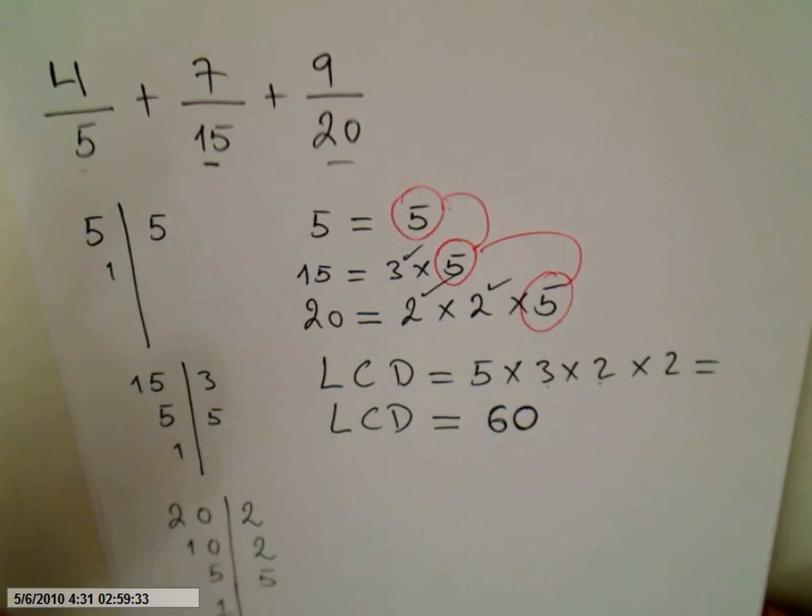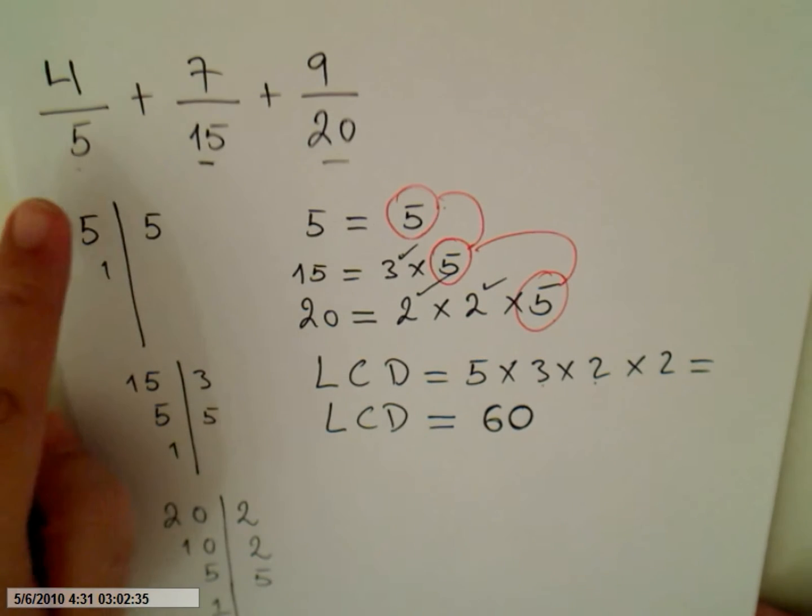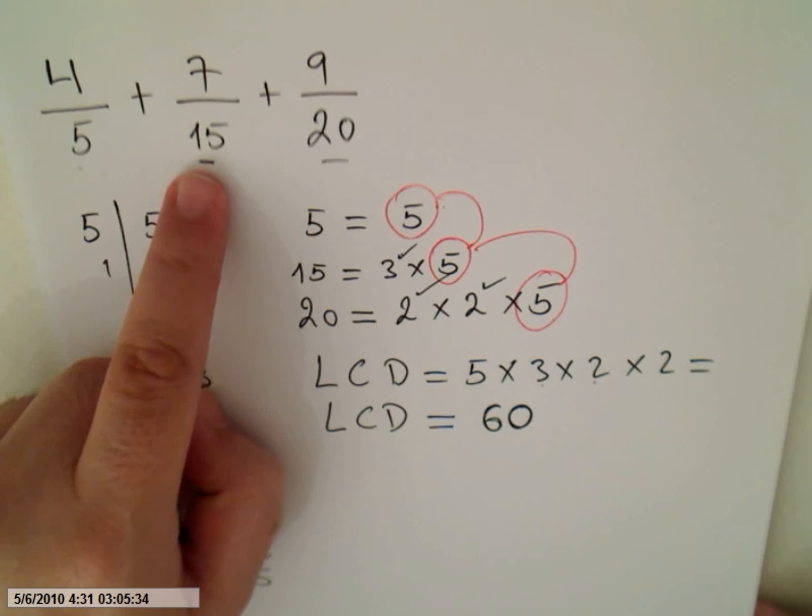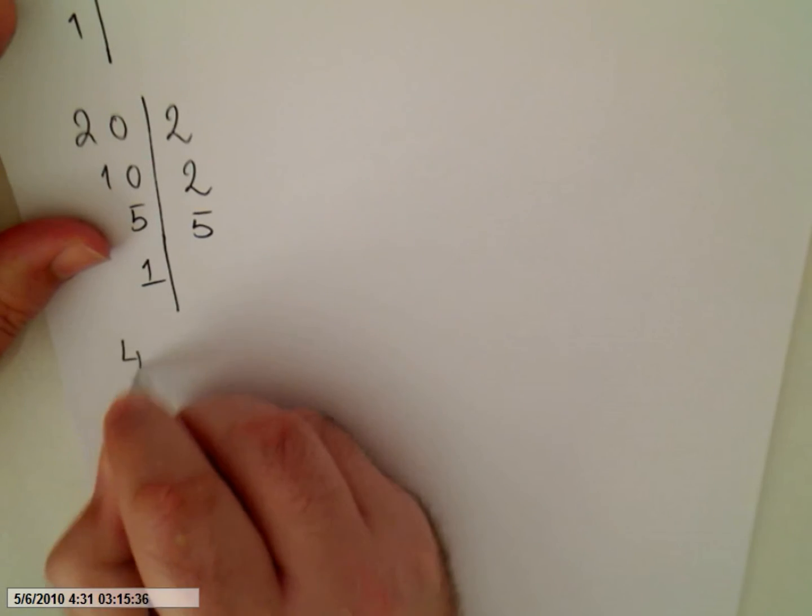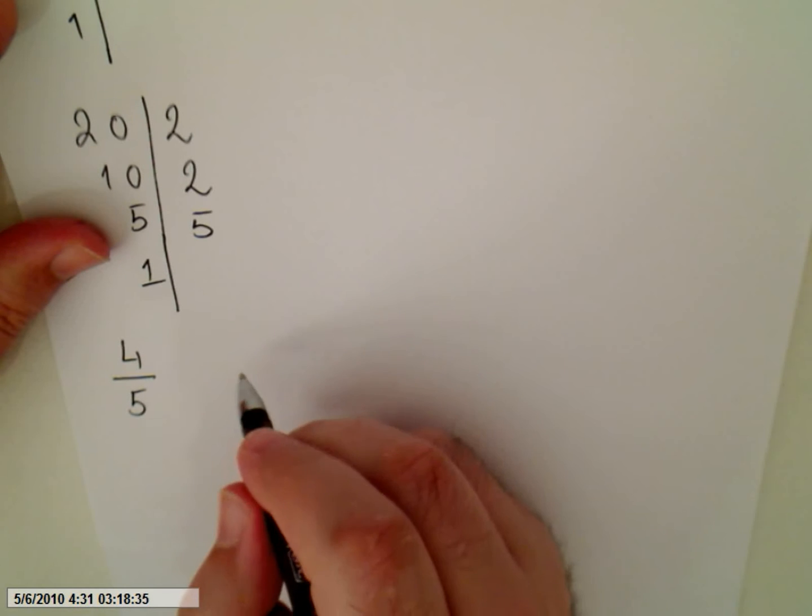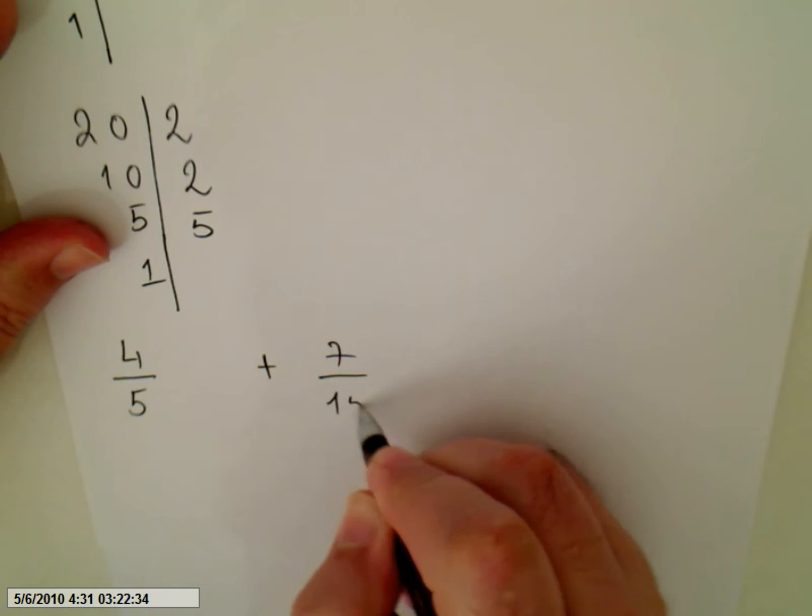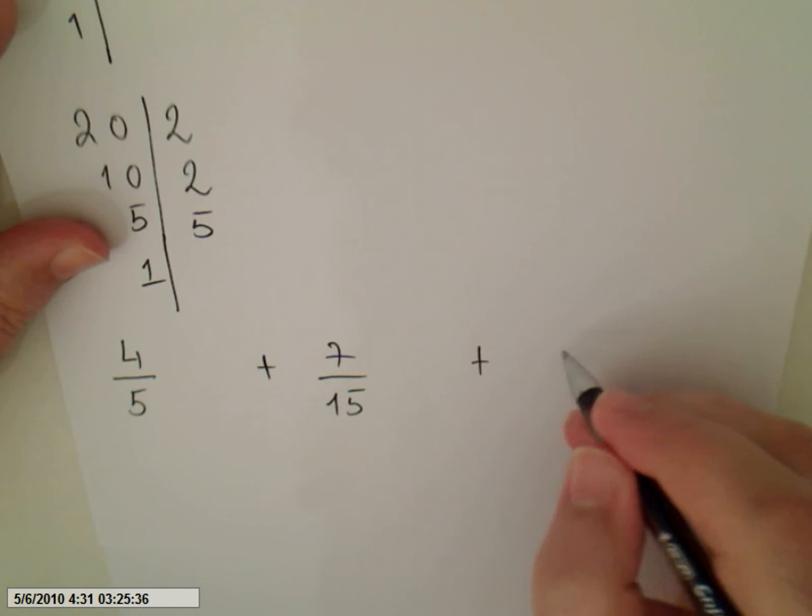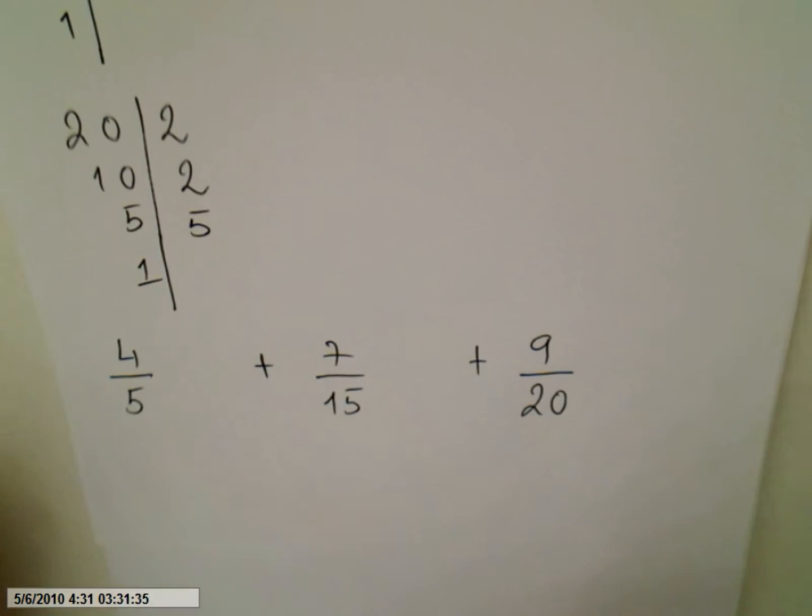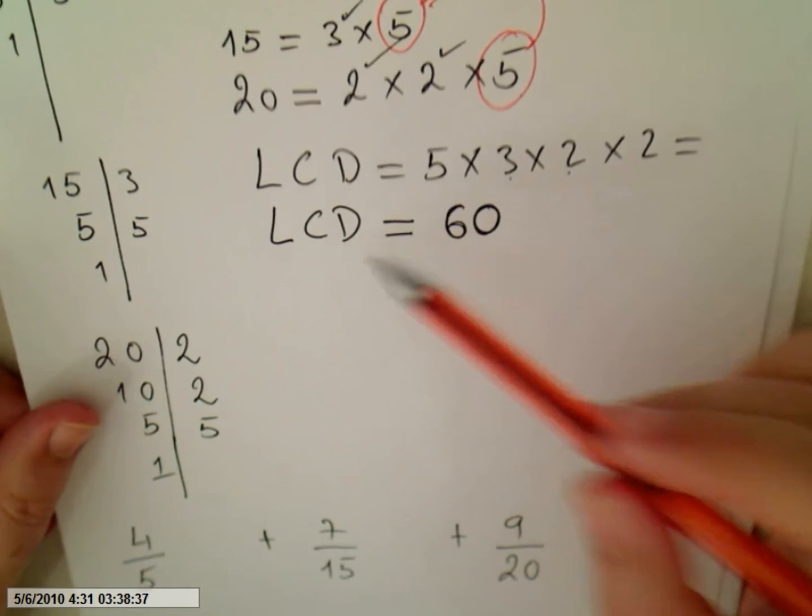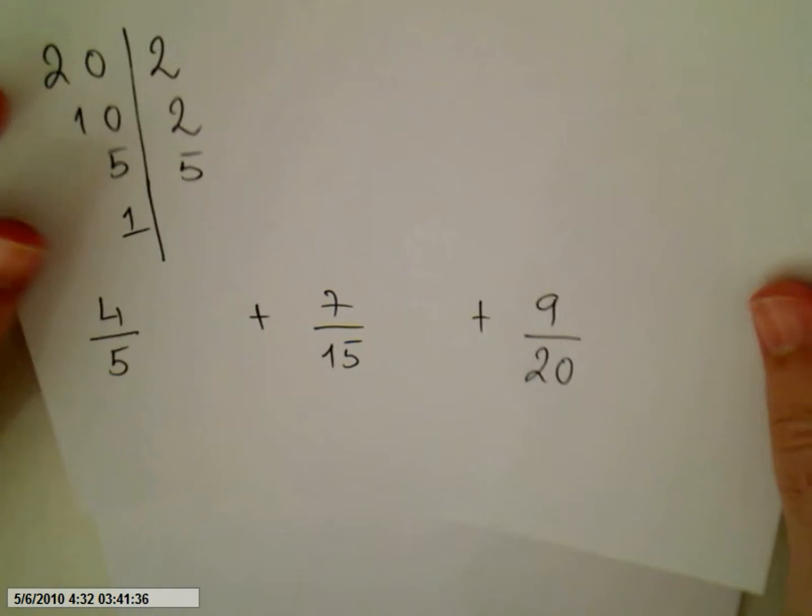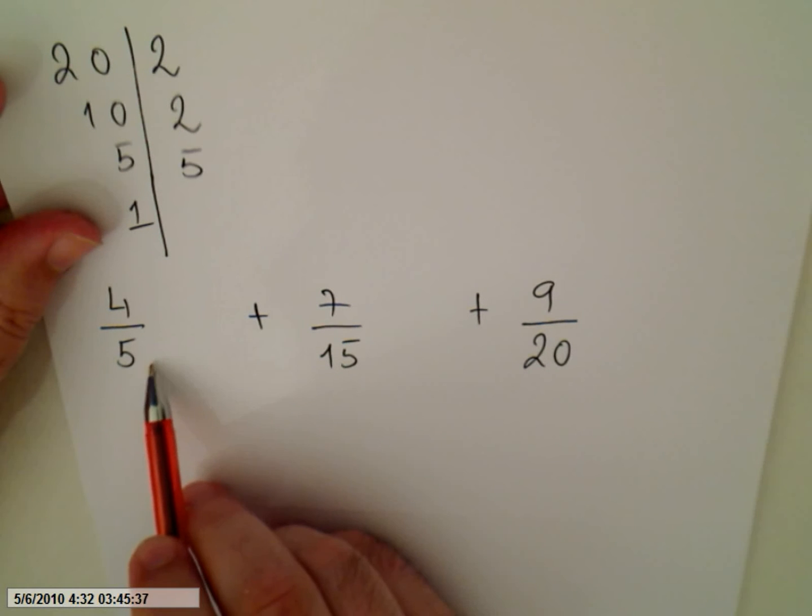So we have to go back here and we have to get a 60 here, 60 here, and a 60 here. So I'm going to rewrite them. So 4 over 5 plus 7 over 15 plus 9 over 20. So we have to get 60s here. I need a 60 here.